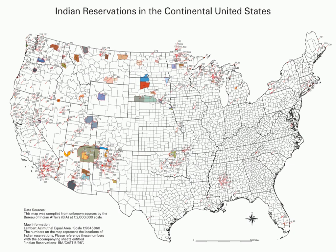Different reservations have different systems of government, which may or may not replicate the forms of government found outside the reservation. Most Native American reservations were established by the federal government; a limited number, mainly in the East, owe their origin to state recognition. The name "reservation" comes from the conception of the Native American tribes as independent sovereigns at the time the U.S. Constitution was ratified.